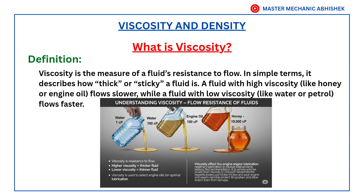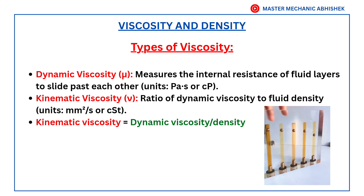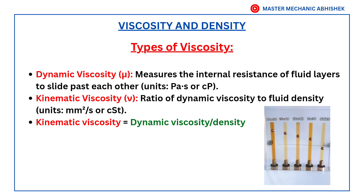A fluid with high viscosity, like honey or engine oil, flows slower, while a fluid with low viscosity, like water or petrol, flows faster. Now let's see the types of viscosity.